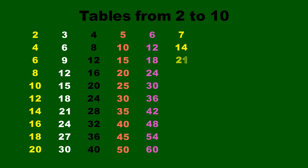7 3s are 21, 7 4s are 28, 7 5s are 35, 7 6s are 42, 7 7s are 49.